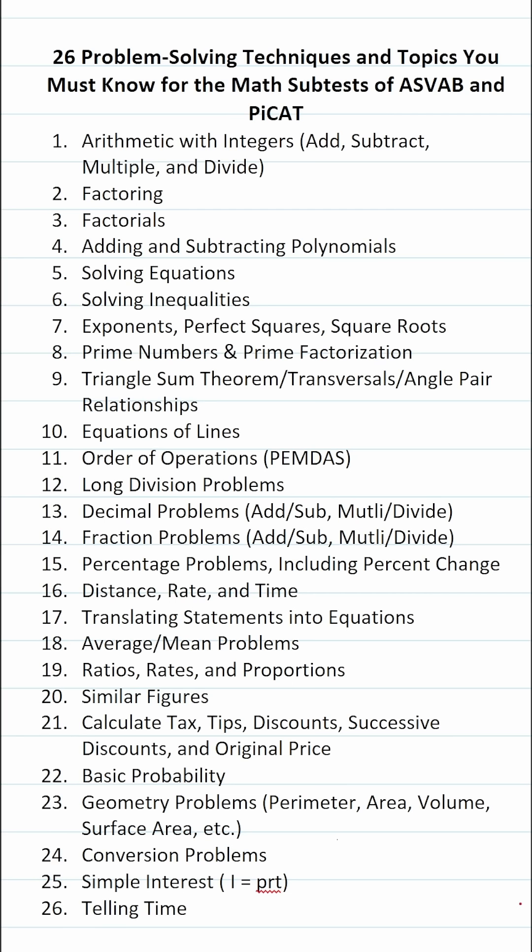First and foremost, you have to be able to perform basic arithmetic with integers. That is to say, you have to be able to add, subtract, multiply, and divide positive and negative numbers. Number two, factoring. You have to be able to factor something where the leading coefficient is one and when the leading coefficient isn't one. You'll see at least two factoring questions on the test.